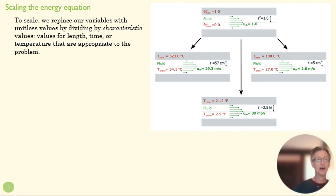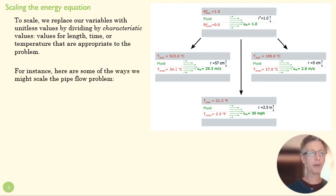To scale, we replace each of the variables in our initial equation, in our dimensioned equation, by a unitless value, by dividing those values by a characteristic value - values for length or time or temperature that are appropriate to the problem. Let's take our pipe flow problem. Instead of having an equation with X, I want a dimensionless X star. So I'm going to divide every length in my problem by the length L.